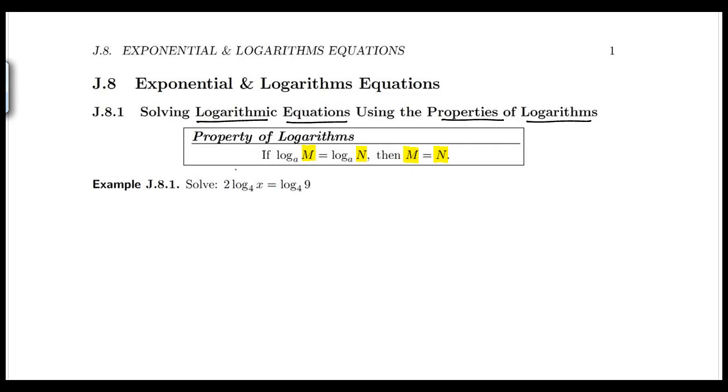So starting with the first example, notice we have 2 log base 4 of x equal to log base 4 of 9. If we wanted to solve this equation using this property of logarithms, we would have to get it into the form of log base a of m equal log base a of n. Notice the coefficients here in front of the logs is 1. We don't always write it, but we know it's there. There is no numbers in front of the log. So in order to use this property, I have to make sure that there's one log on one side of the equal sign, one log on the other side of the equal sign, in which they have the same base a and no coefficients in front of the log. And then I can go ahead and drop the logs and just make the values equal to each other.